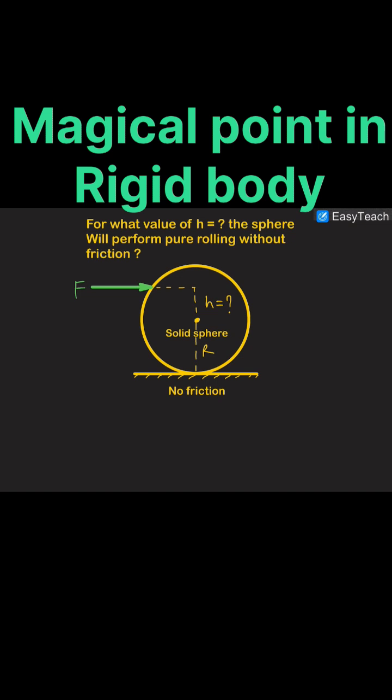You just need to apply the force at the correct point. Now this height h should be k squared by r, where k is the radius of gyration of the object which is rolling.